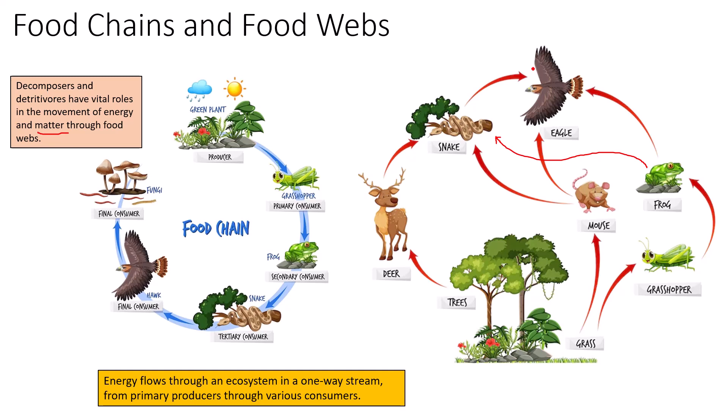In most cases the final consumer is either a quaternary consumer or a decomposer like fungus. Nutrients recycle. It's important to distinguish between the two: energy flows in one direction, and nutrients cycle. If you learned something, give it a thumbs up, leave a comment, subscribe. See ya!